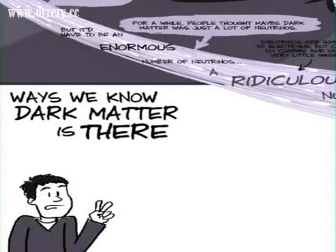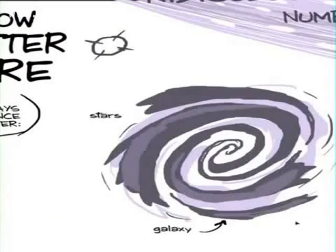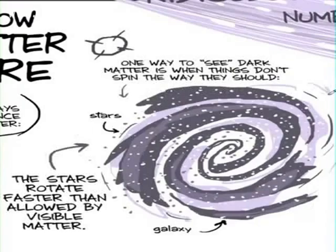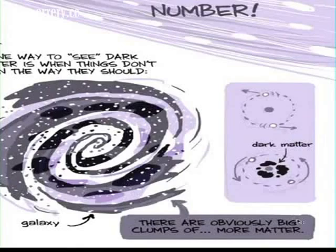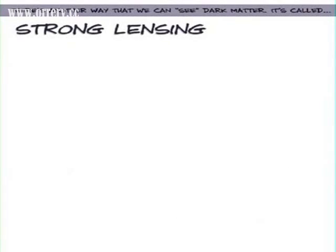There's two classes of ways that we have at this point. One way to see dark matter is things don't spin the way they should if there's only normal matter. There's obviously big clumps of dark matter. There's another one that's really cool, too. It's called strong lensing.